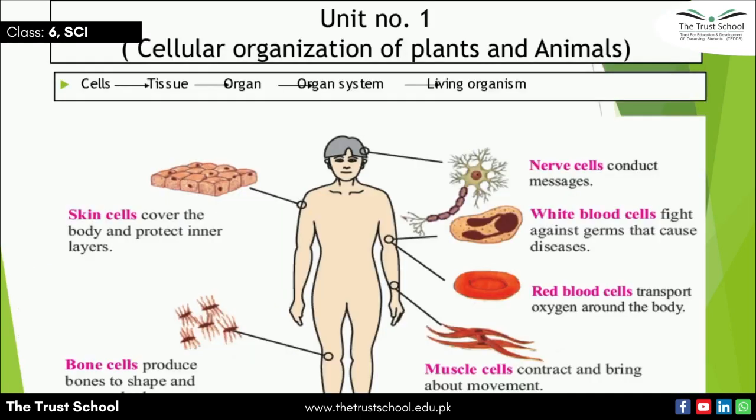Students, your first four worksheets in SVT science are from unit number one. In unit one, we learned about cellular organization of plants and animals. Here is a picture of the human body showing that plenty of cells are present, which are skin cells, bone cells, nerve cells, white blood cells, red blood cells, and muscle cells, with their functions written in front of them.